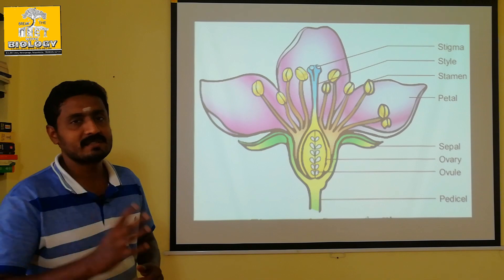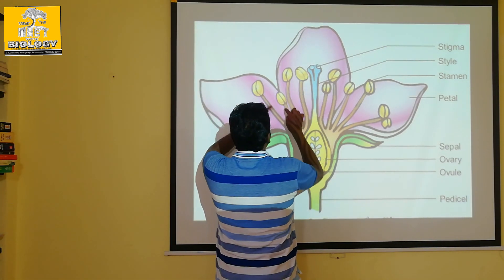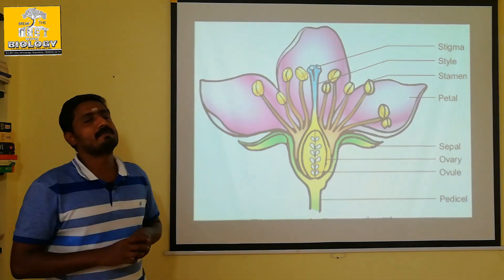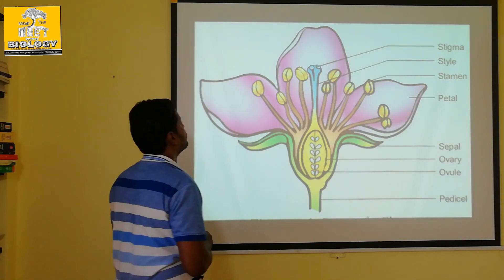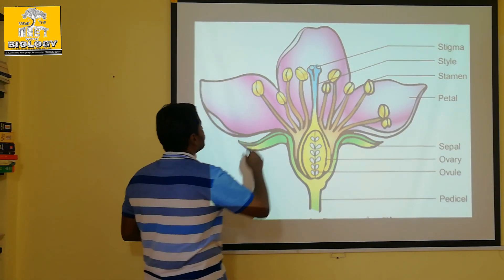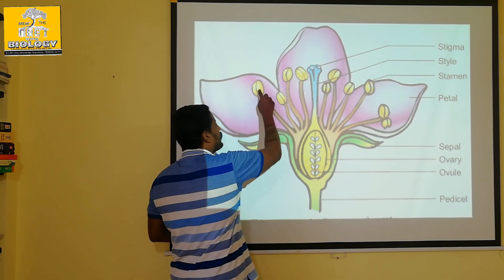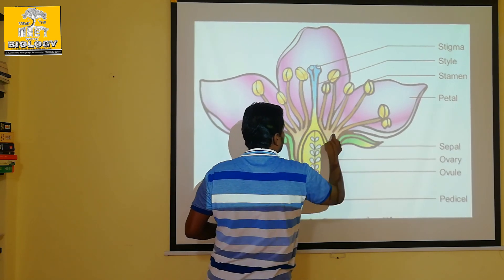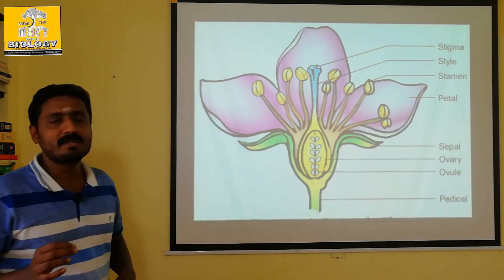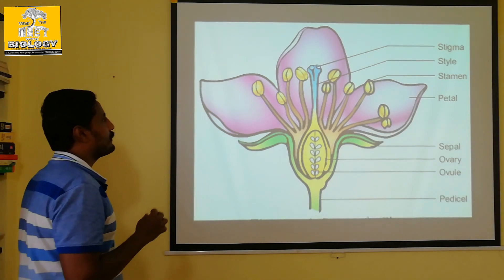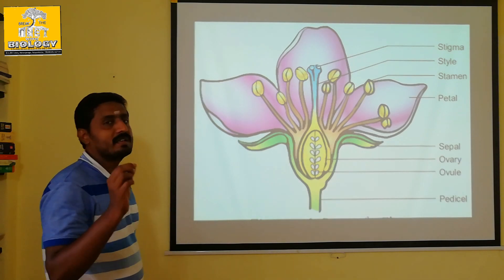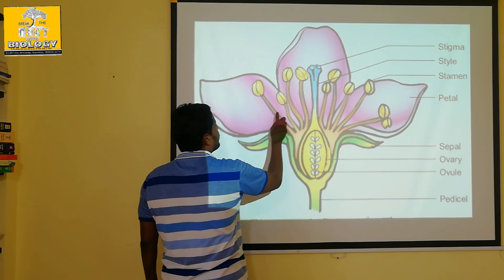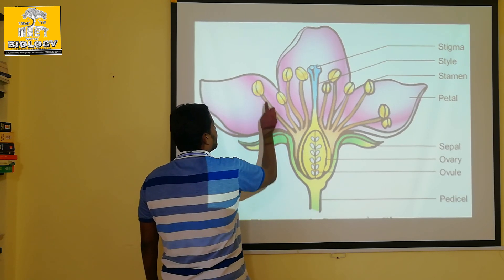Androecium is made up of stamens. A number of stamens unite to form the androecium. Each stamen consists of two parts: the anther and the filament.